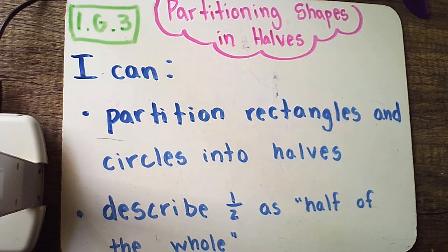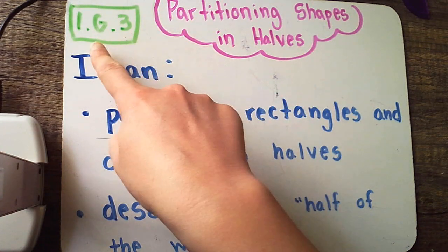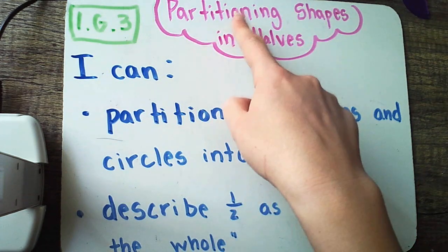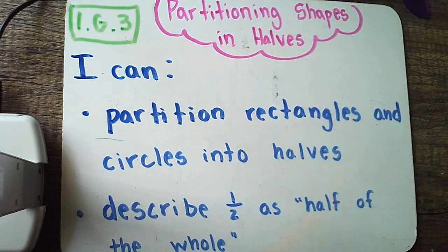This week we're continuing in our unit on geometry. We know that geometry is the study of shapes and we are focusing on partitioning or cutting shapes into smaller equal pieces. We will be working still in 1G3, that's our standard, and we're partitioning shapes in halves today. You might have heard somebody say before, can I have half of that? Well that's exactly what we're going to be working on today, building off of what we learned about equal parts yesterday.